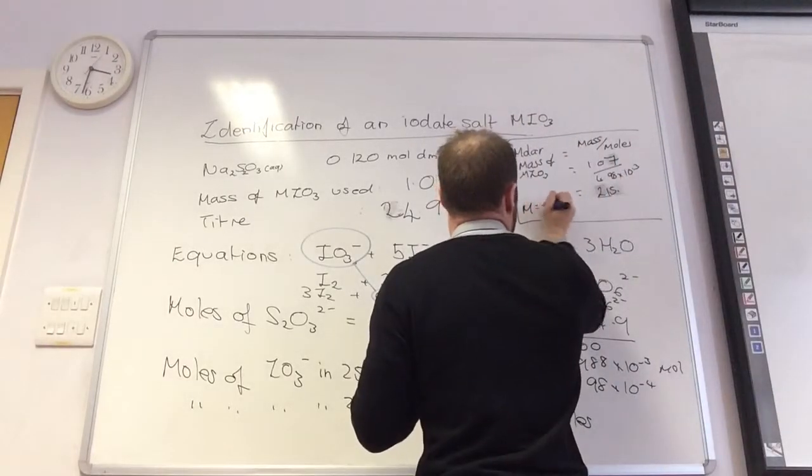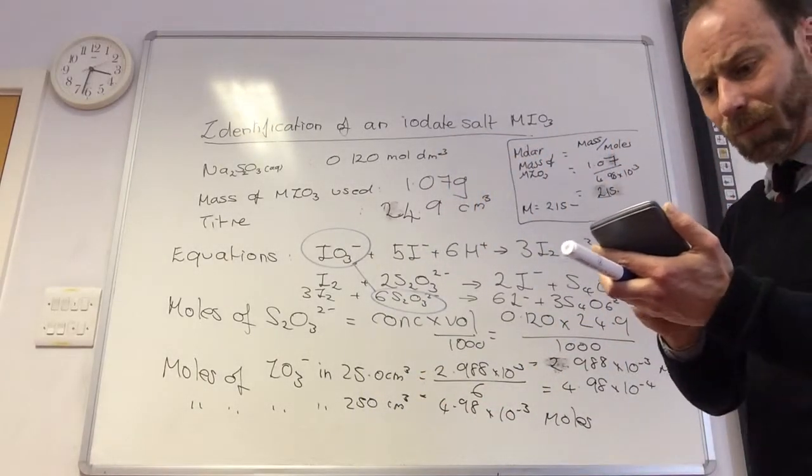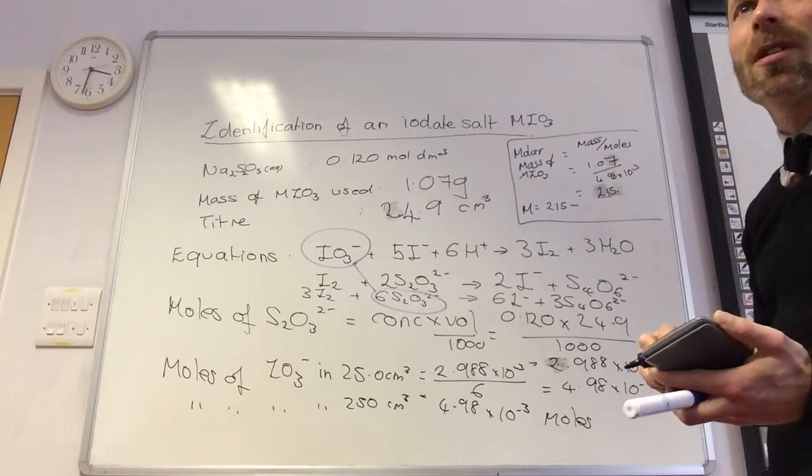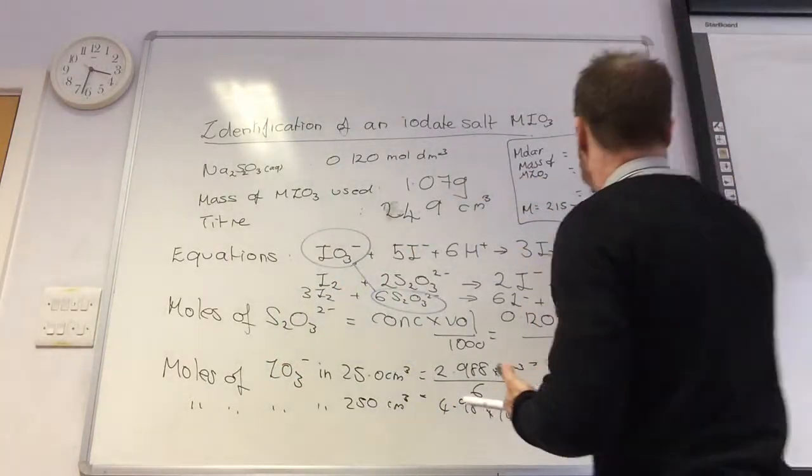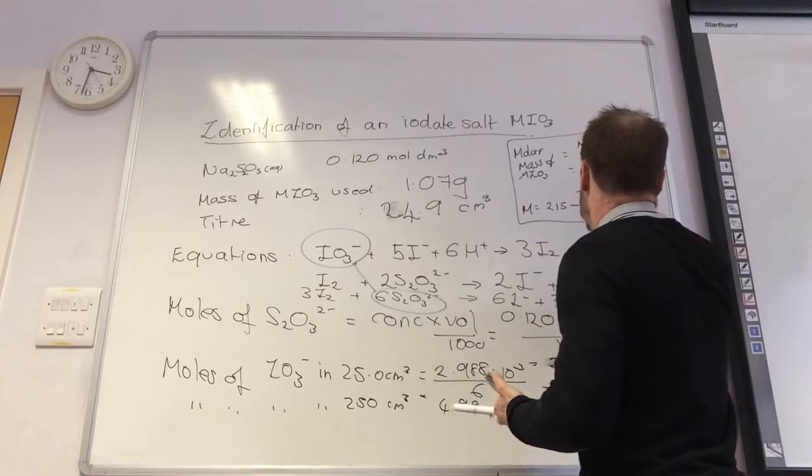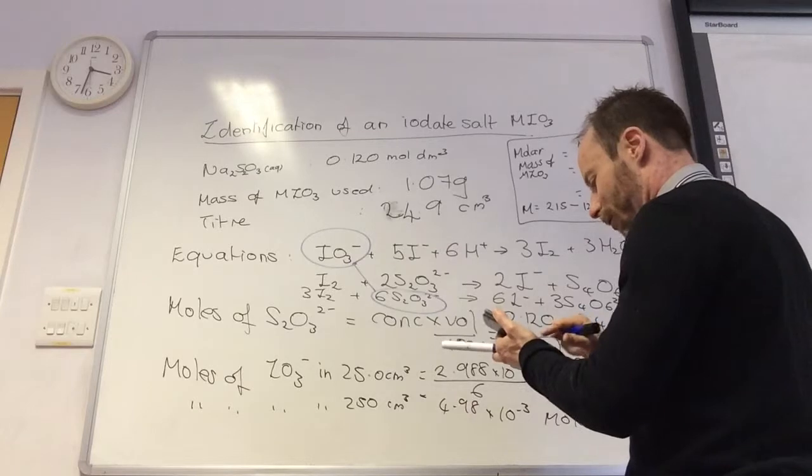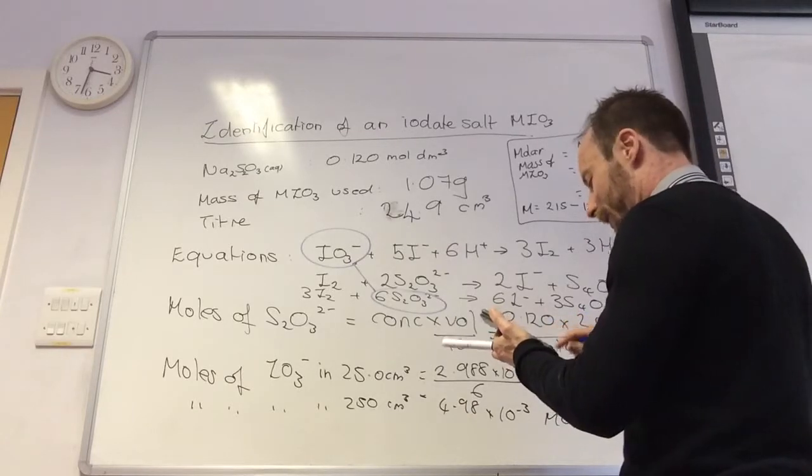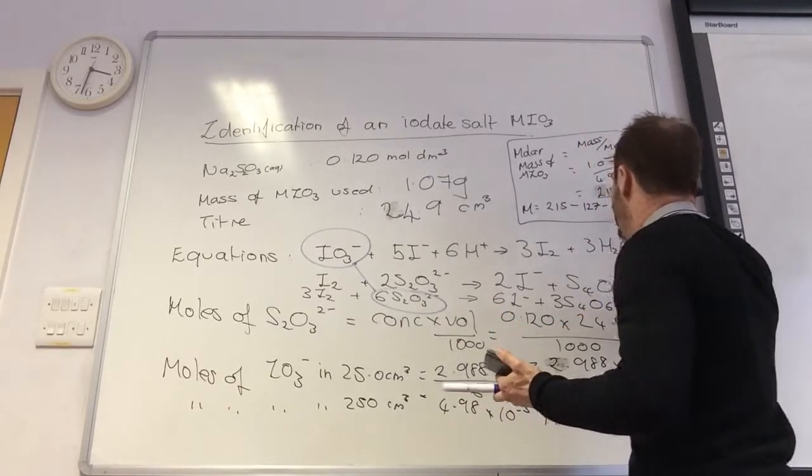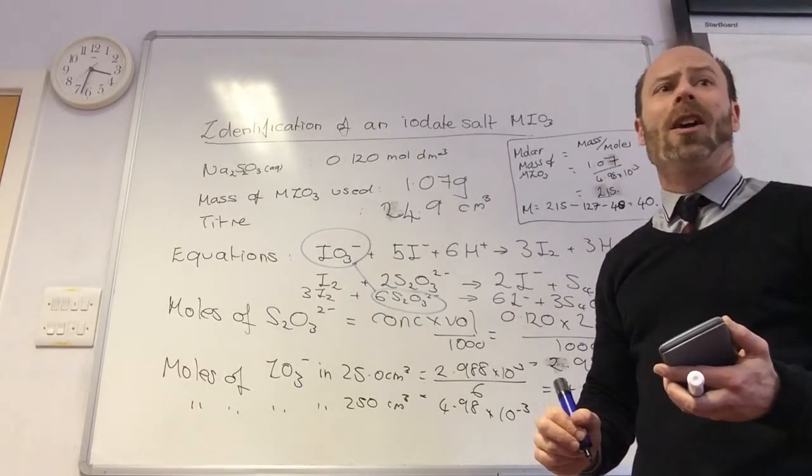What's iodine on your periodic tables? Iodine is 127. Three oxygens are 48. So 250 minus 127 minus 48 gives me 40. So what is my unknown metal?